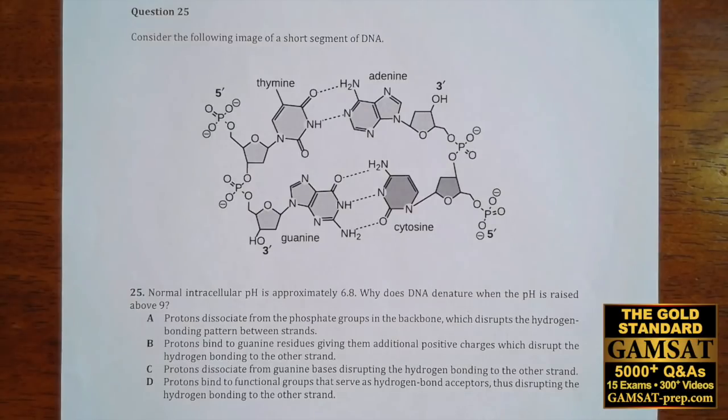So anyway, it's very clear that if protons dissociate, for example, from the guanine bases, and therefore, you don't have that delta positive hydrogen that can hydrogen bond with something that is delta negative on the other side, like oxygen or nitrogen on the other side, that would disrupt the hydrogen bonding pattern, and the molecule will no longer be in its natural state, it will be denatured.